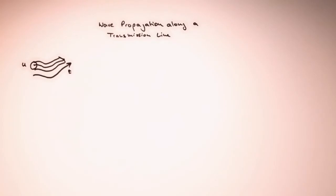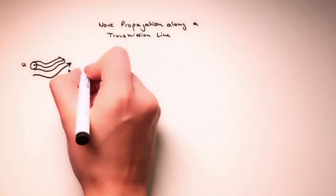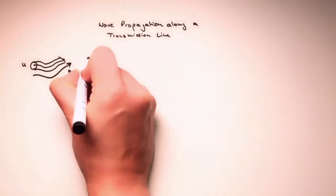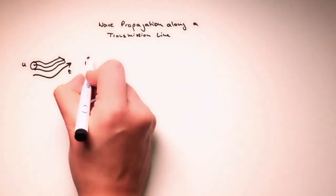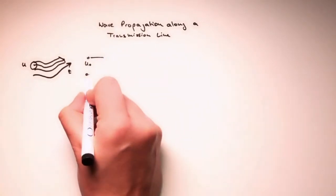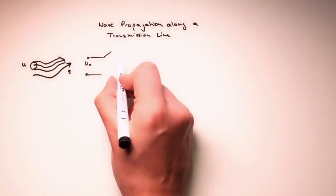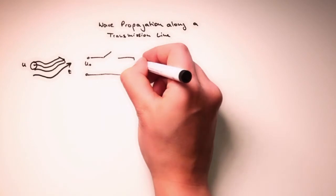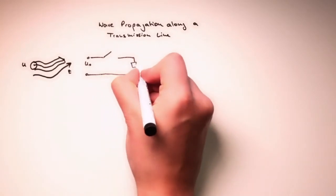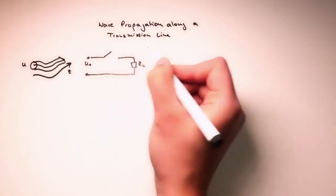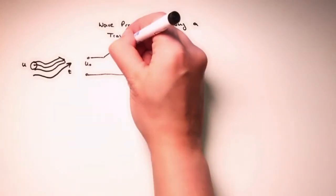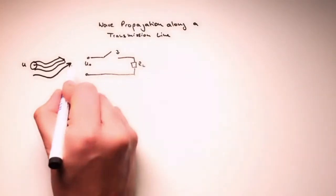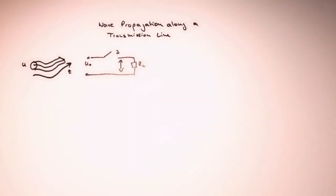Now, what we want to do is we want to start with some voltage U0 and we want to describe how this is propagating. Let's put a switch here and on the other side we would have something that's a load, call that RL for a load and we want to understand when we close that switch how the voltage is propagating along the line. This is the problem.